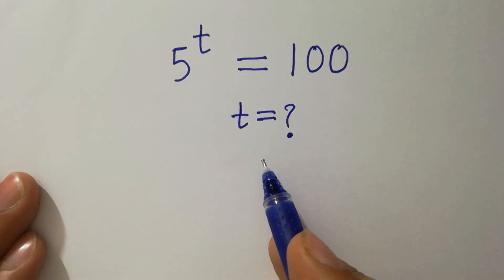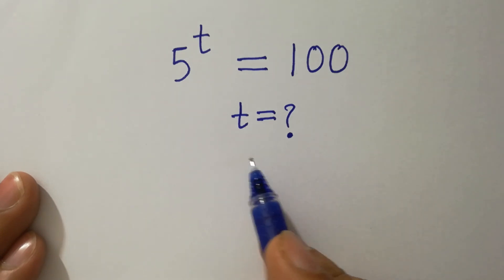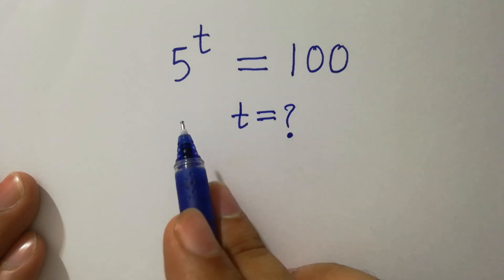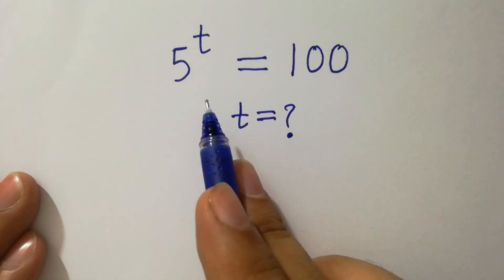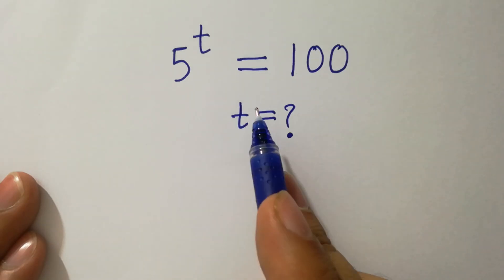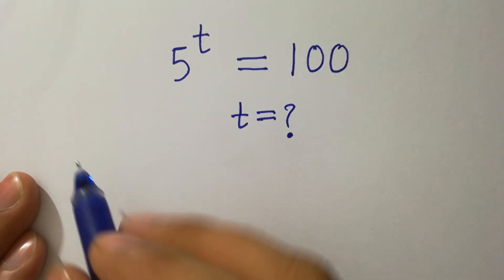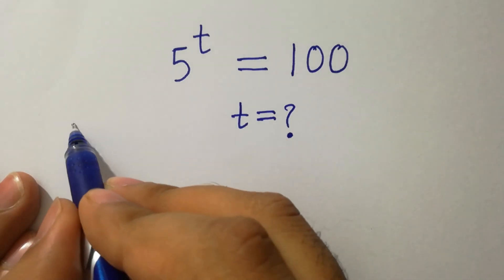Hello friends, find the value of t if 5 to the power t equals 100. Let's have a solution.